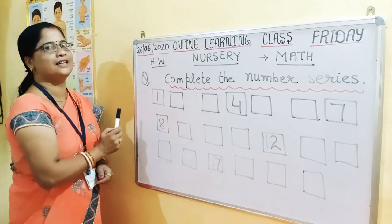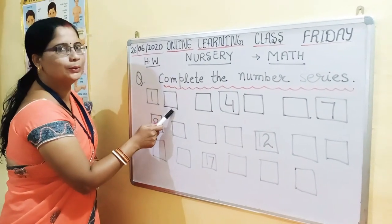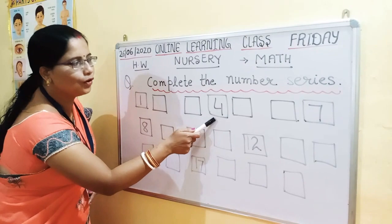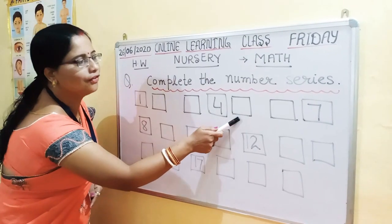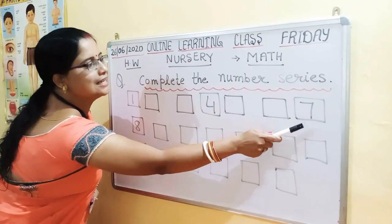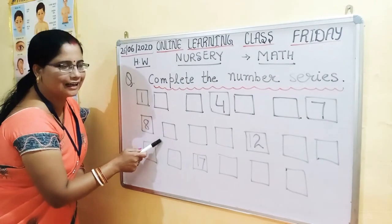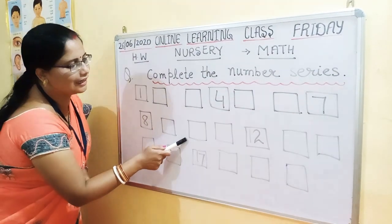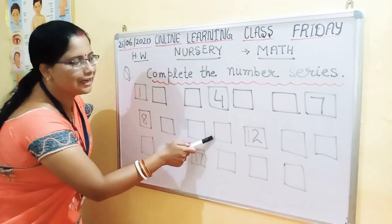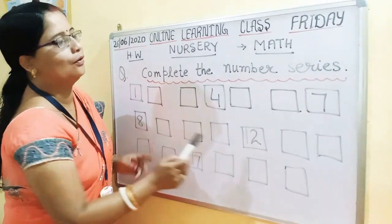Now let's review. 1, 2, 3, 4, 5, 6, 7, 8, 9, 10. 1, 1 — 11. 1, 2 — 12.